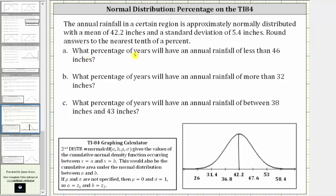For part A, what percentage of years will have an annual rainfall of less than 46 inches. We can indicate this as the probability or percentage that x is less than 46. Looking at the graph, notice 46 is approximately here.